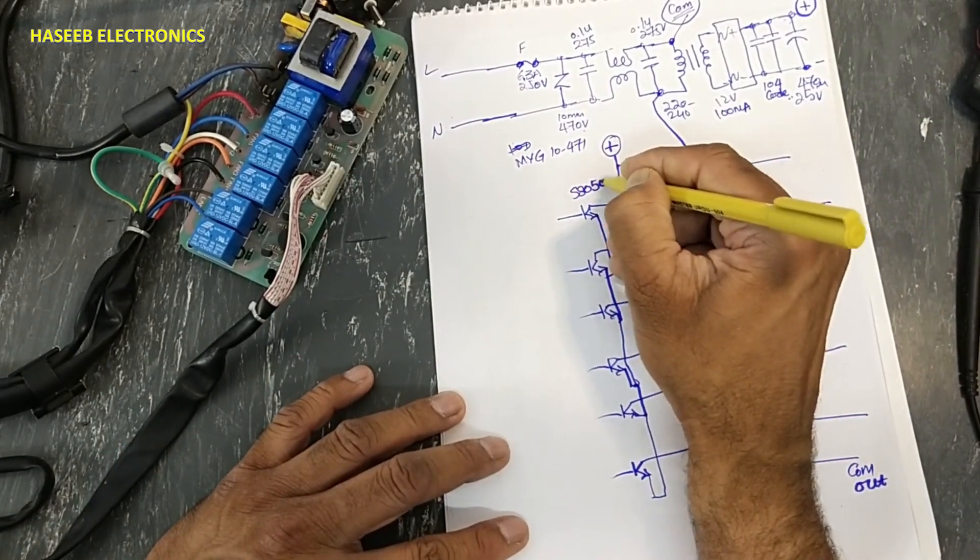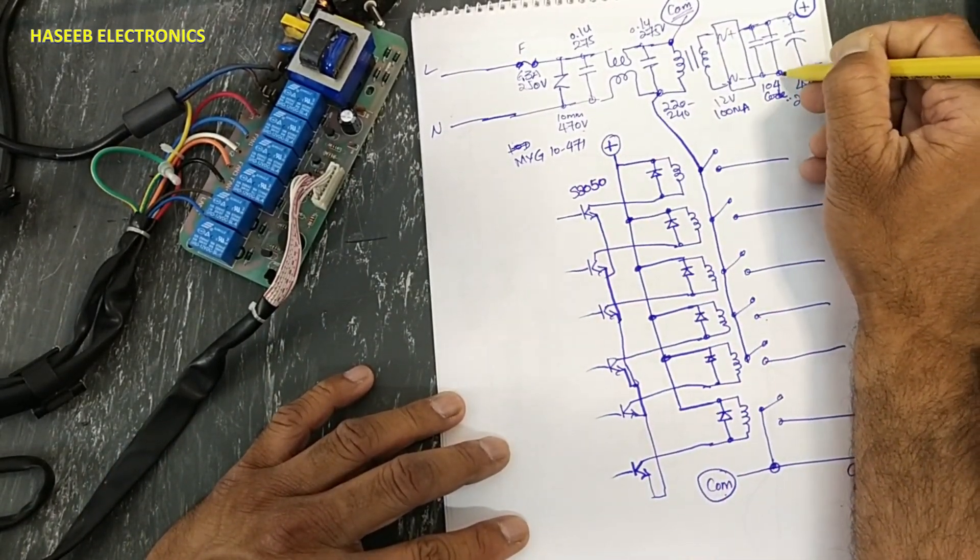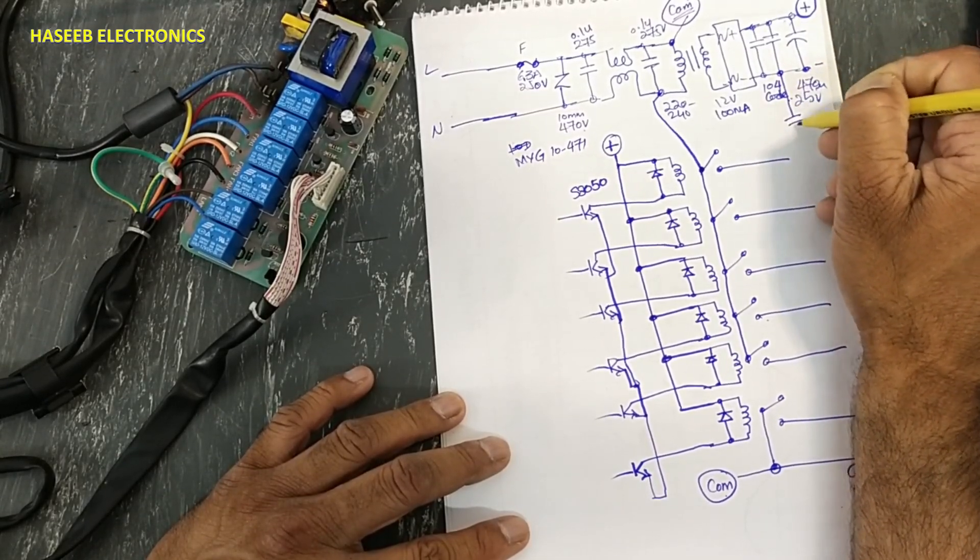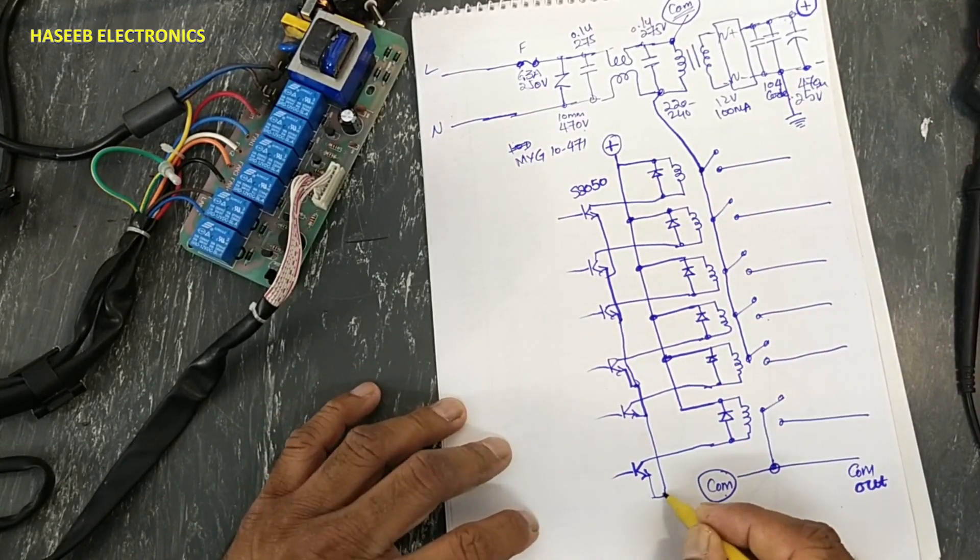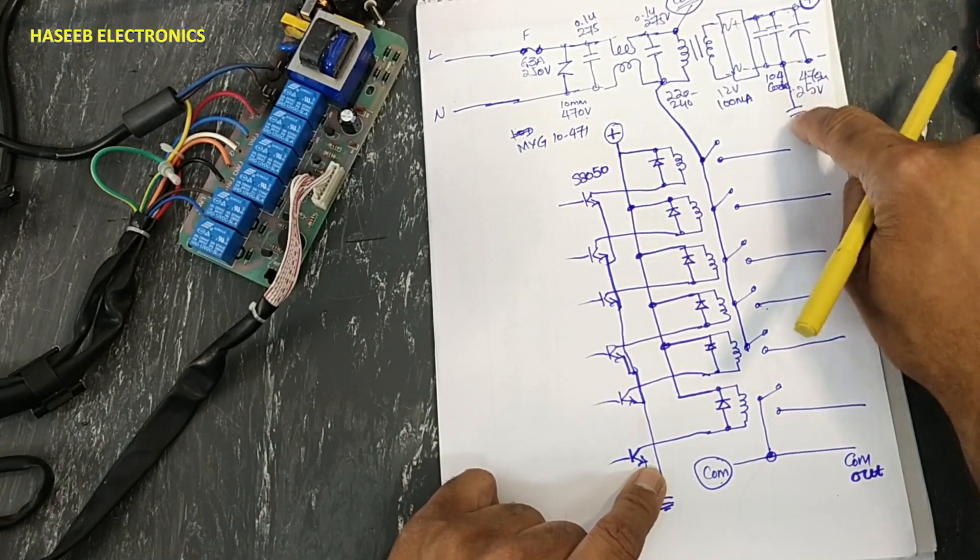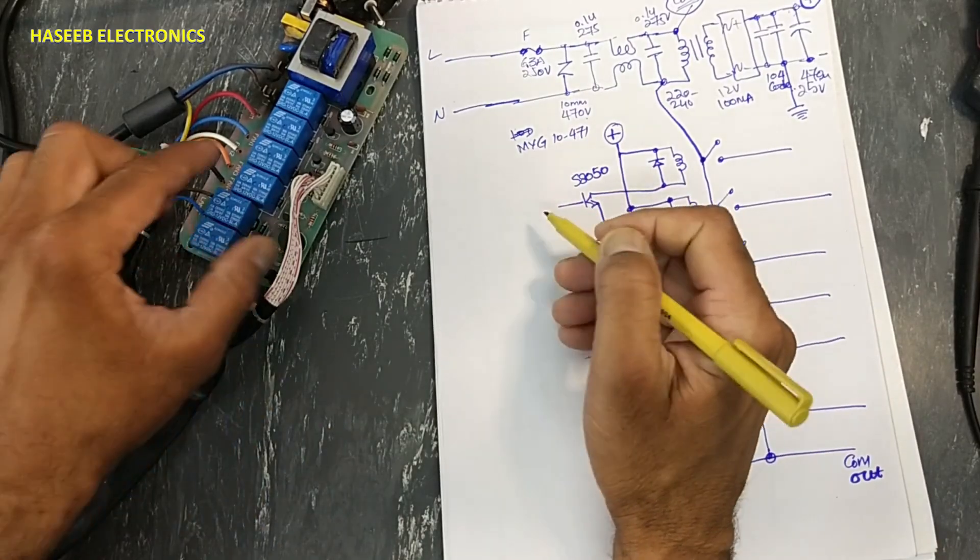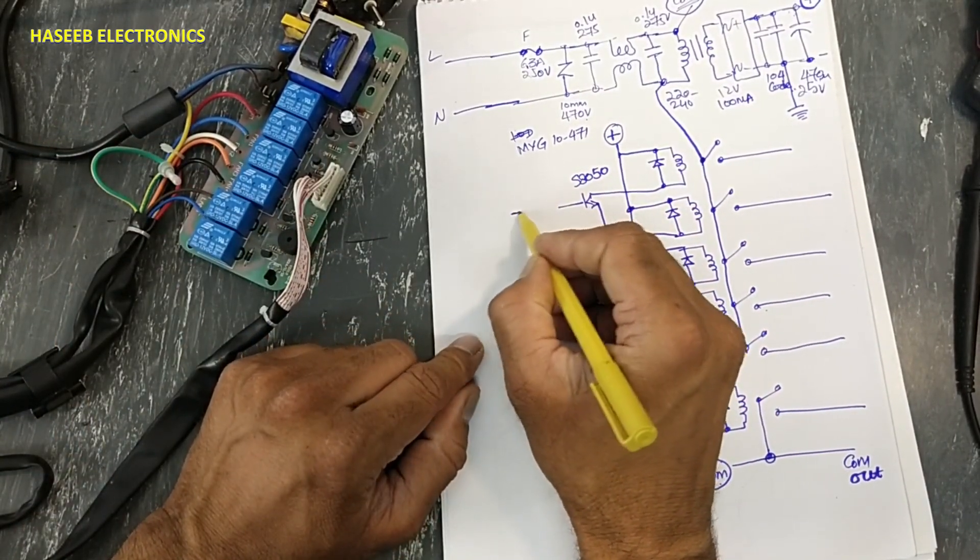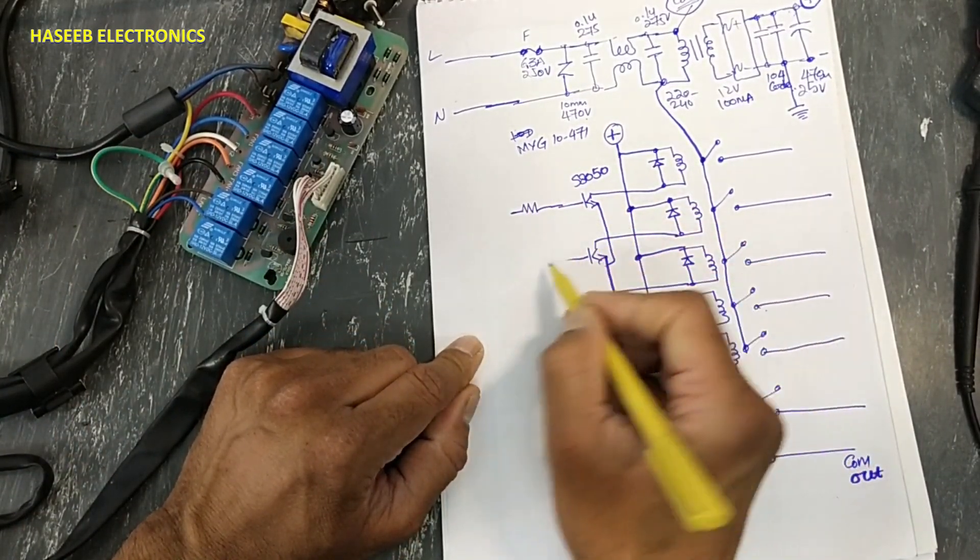Collector here, collector here, collector here, this collector, this collector, this collector. Emitters are grounded. SS 8050. And at this point, it is a ground point. Emitters are grounded. This ground is connected here.